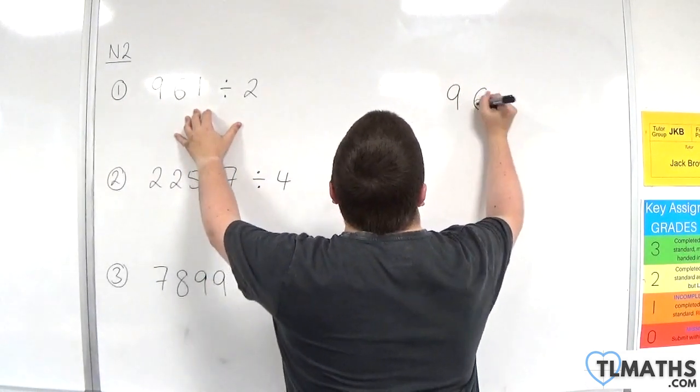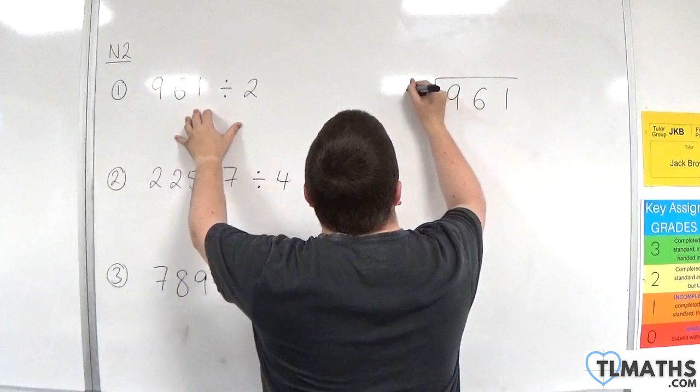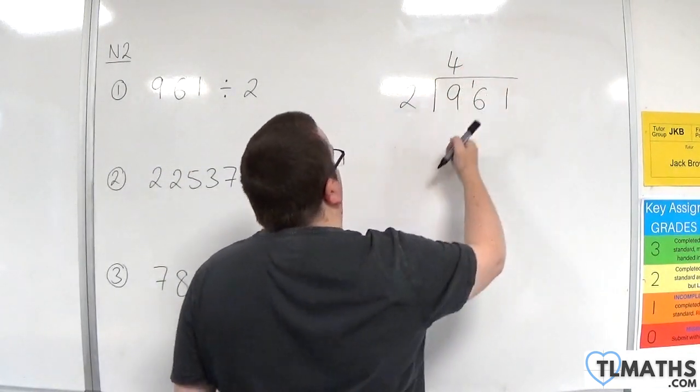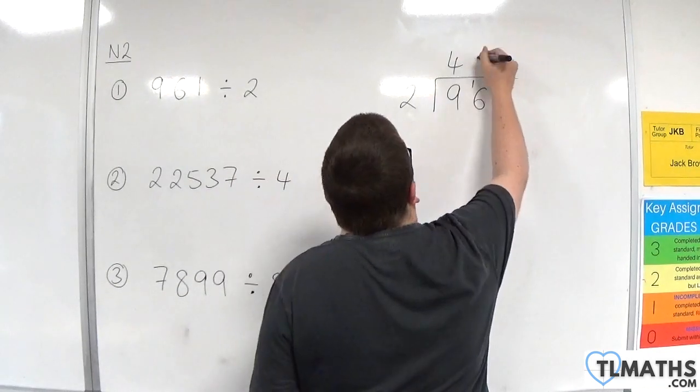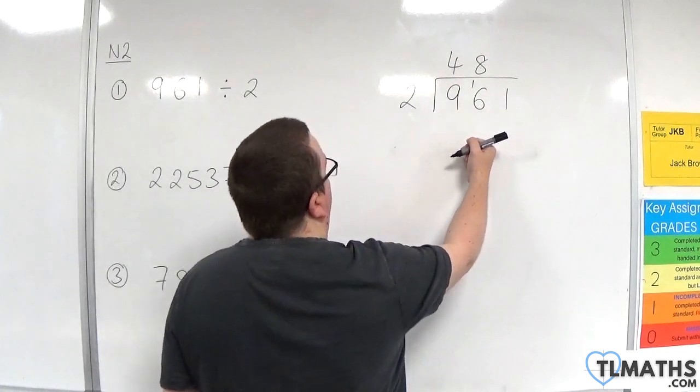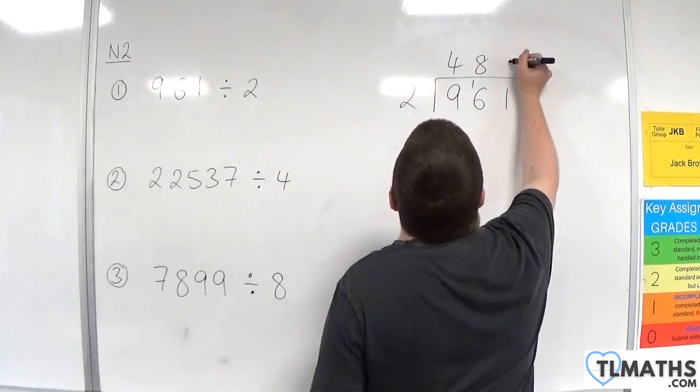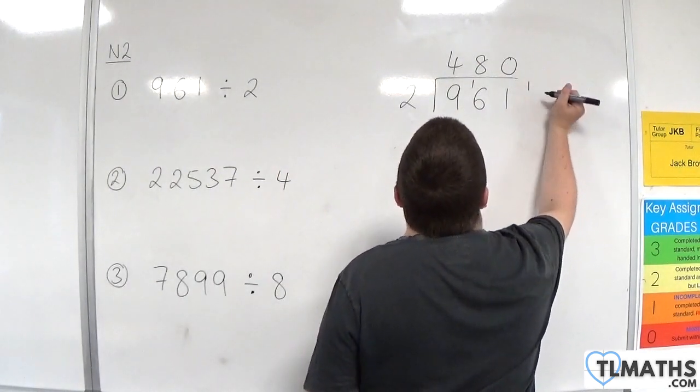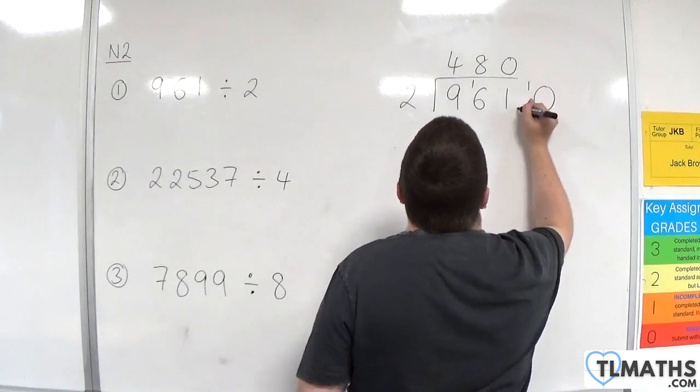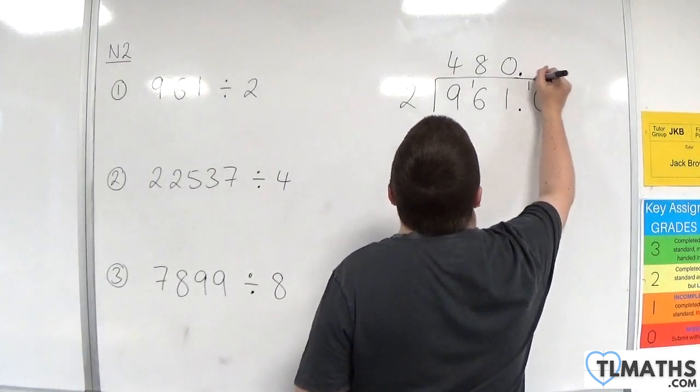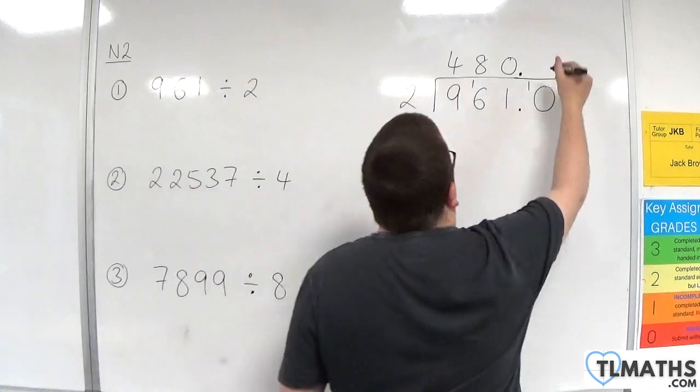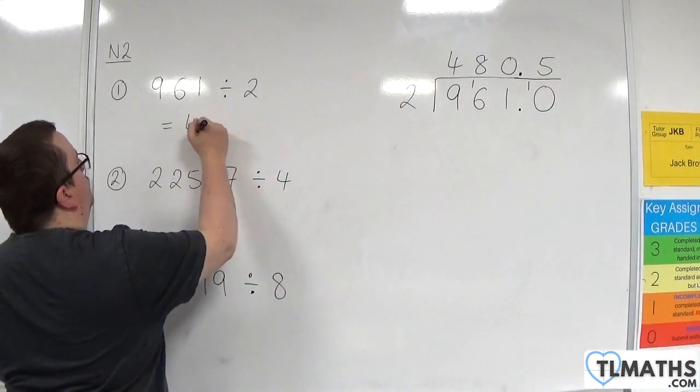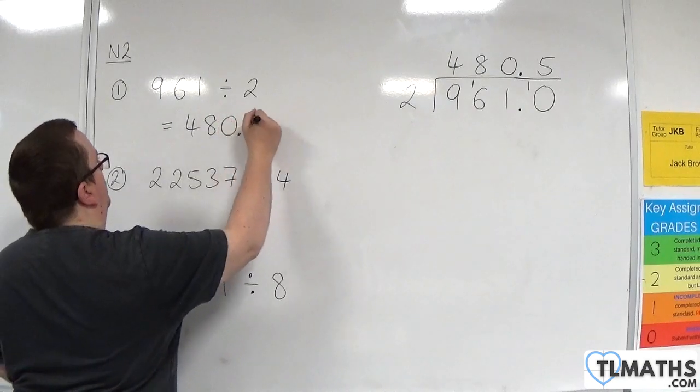9, 6, 1 divided by 2. So 2's into 9 go 4 times with 1 left over. 2's into 16 go 8 times with 0 remainder. 2's into 1 go 0 with 1 remainder. So we've got this 1 hanging off the end, so we need to put in a 0 and decimal points. 2's into 10 go 5. So this is 480.5.